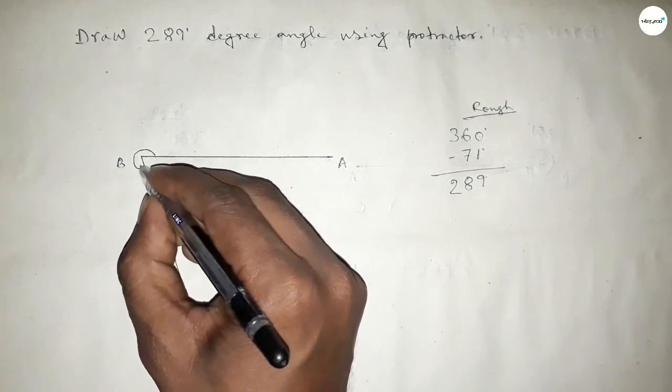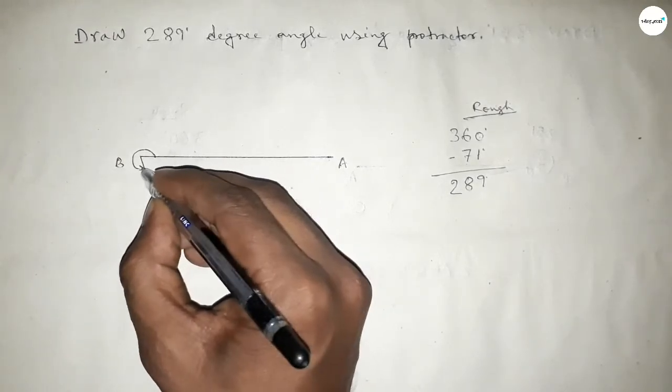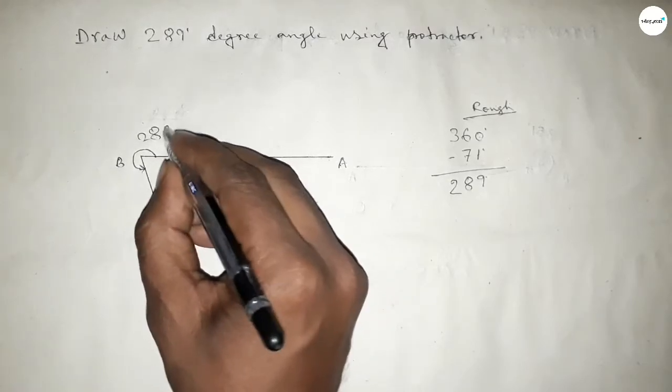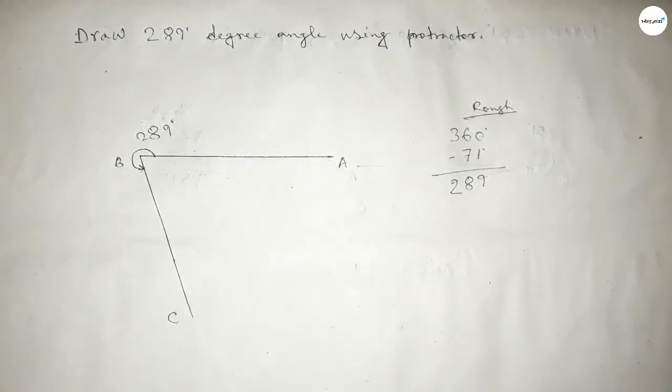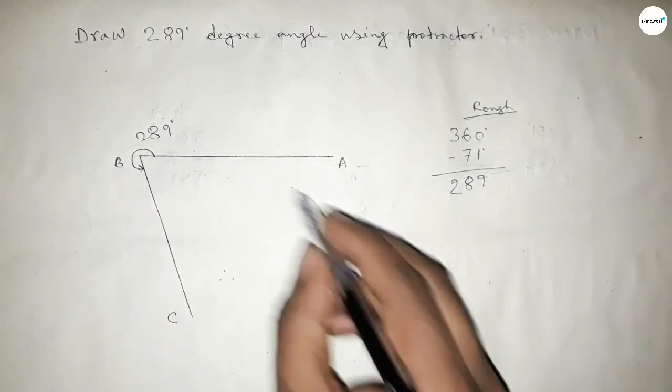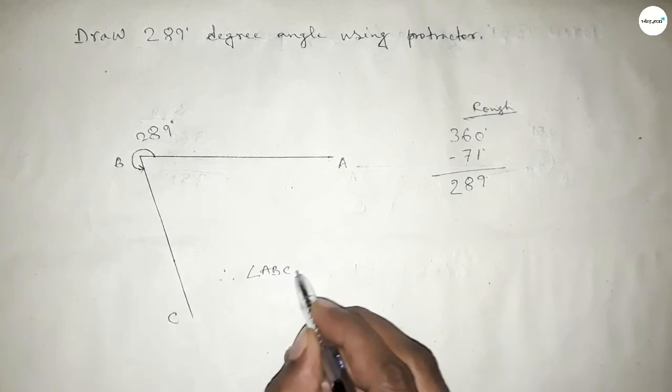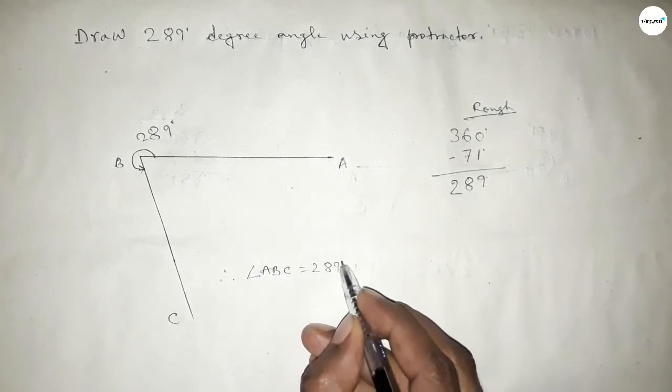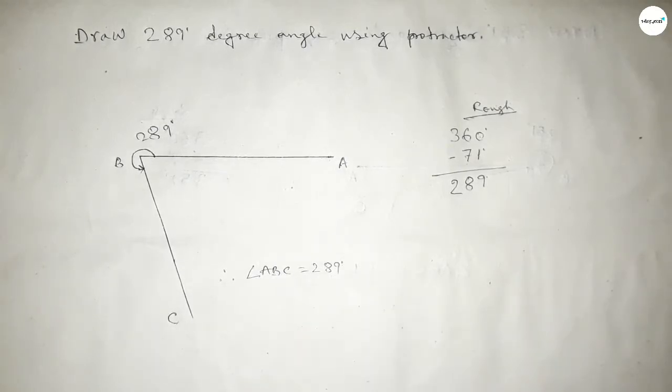So angle ABC is 289 degree angle. Therefore, angle ABC equals 289 degrees. That's all, thanks for watching. If this video is helpful to you, then please share it with your friends.